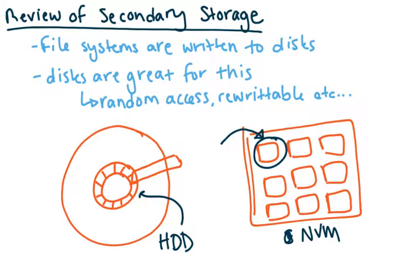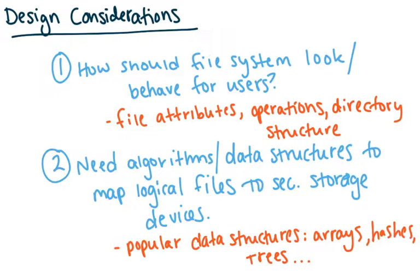The main design considerations: first is a user-centric concern — how do we want the file system to look and behave for users? This covers what file attributes each file has, what operations users can perform on files, and what directory structure they see and interact with. Second, we need to design algorithms and data structures to map these logical files to secondary storage devices. Some popular data structures we'll cover in future videos are arrays, hashes, and trees.